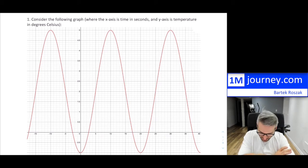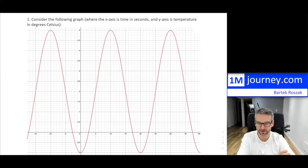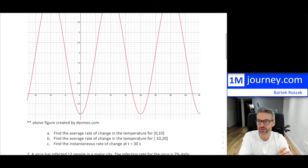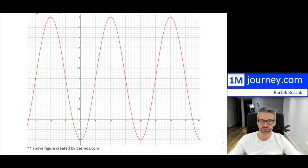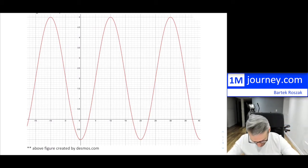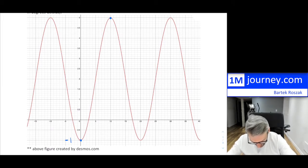Consider the following graph — I did this graph in decimals. We're going to assume the x-axis is a time scale and the y-axis is a temperature scale in degrees. The first part asks us to find the average rate of change in temperature between zero and ten. So between t=0, where the value is negative one, and t=10, where the value is five.